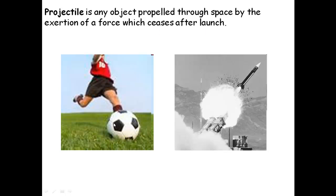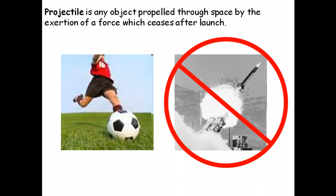So you kick the football — for a short period of time there's a force of your foot acting on the ball, and then the ball flies through space and there's only one force acting on it, and that's gravity pulling it down, and there's nothing else. Whereas the rocket is different — it's being propelled throughout the motion of its flight, so there are more forces acting on it than just gravity. There's the force of the thrust as well.